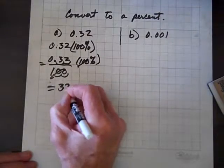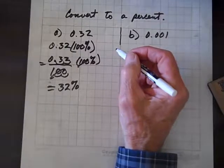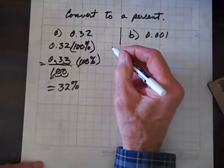And we're left with 32%. Bottom line is, we move the decimal over twice to the right, and we can change it to a percent.